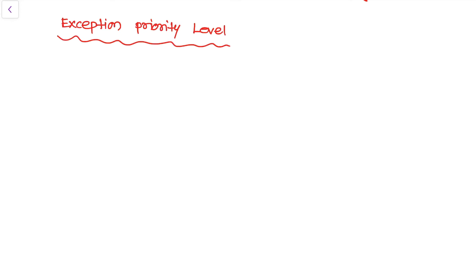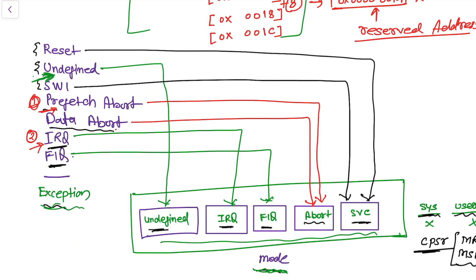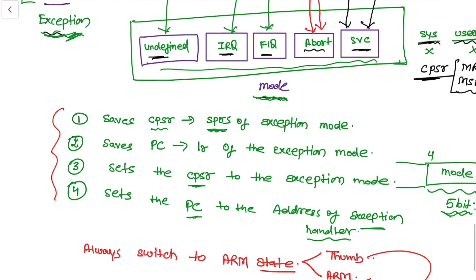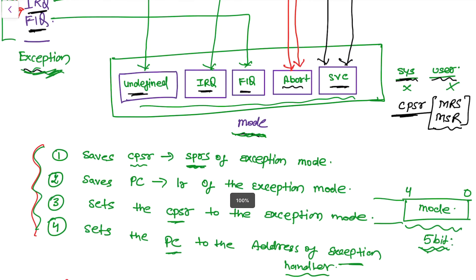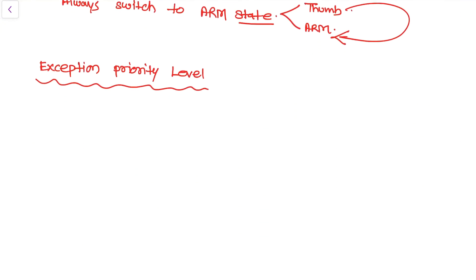Hi, welcome back to your new lesson. In this lesson, I am going to tell you what will happen if multiple exceptions occur at the same time in our microcontroller. In a previous lesson, I had shown you the seven exception modes. The question is: what will happen if the prefetch abort or the IRQ occurred simultaneously, or any other two or more exceptions occurred simultaneously? The processor may enter a dilemma about which mode to select, and here is the procedure for mode selection and interrupt service routine execution.